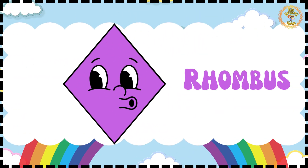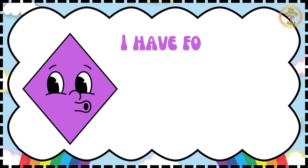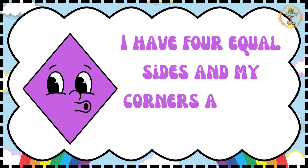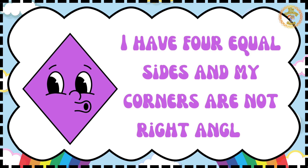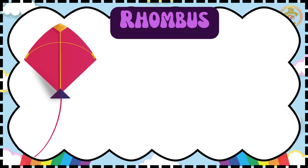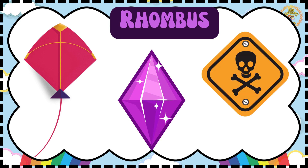Hi there, I am Rhombus. I have 4 equal sides and my corners are not right angled. I am like a tilted square. You will see me in kites, diamonds and signs.